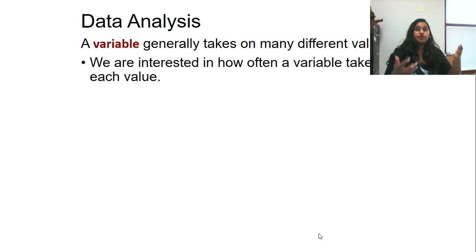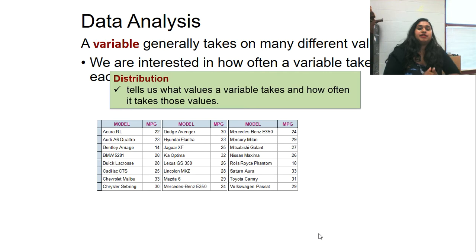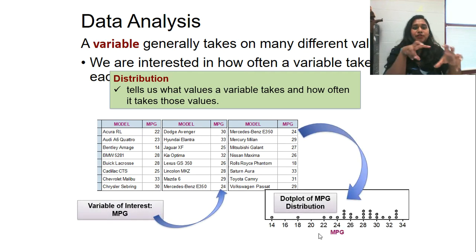So a variable generally takes on many different values. We're interested in how often a variable can take each value. Distribution tells us what values a variable takes and how often it takes those values. So we know what a variable is. We kind of recognize it. Maybe science, maybe previous classes has kind of taught us that variables can be these different things that we determine. Distribution is the actual number. What is the spread? We don't know that word just yet. Does it repeat? These are the words that you might recognize from previous ones: mean, median, mode, spread, center. All of those fun vocab words kind of comes in this distribution. So this is just a brief little example. Variables of interest would be those miles per gallon, and then the dot plot of the mile per gallon distribution is shown right here. So that's one of the types of displayings that we can use is a dot plot distribution.